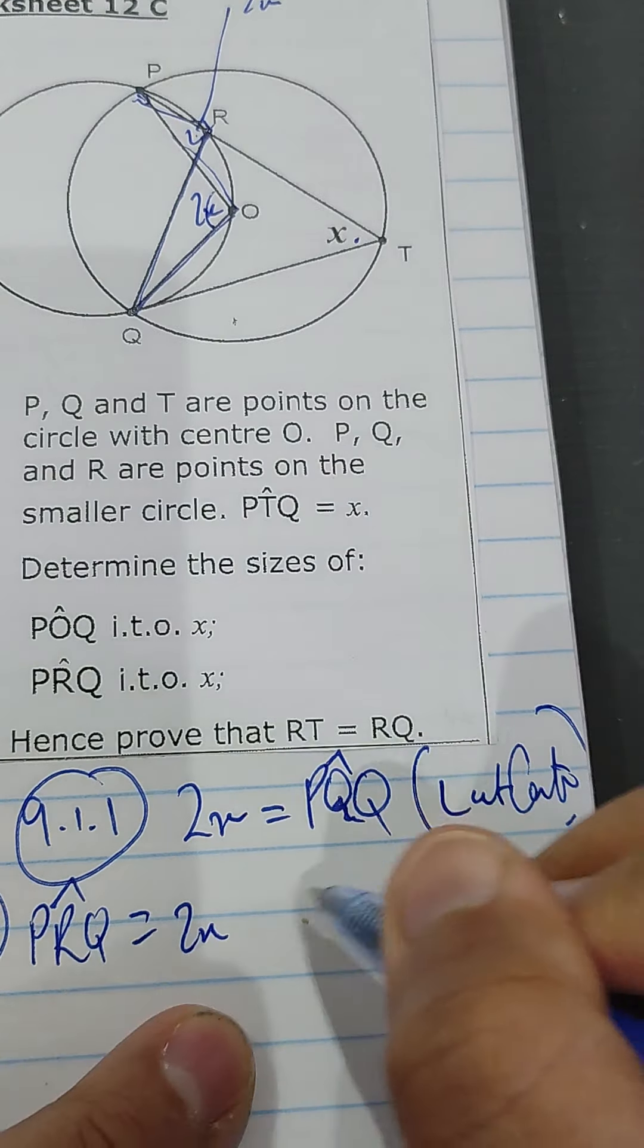In 9.2, the question says hence prove that RT is equal to RQ. Now, for these to be equal, you must ask yourself, if those links were equal, what would have been equal? And if those links were equal